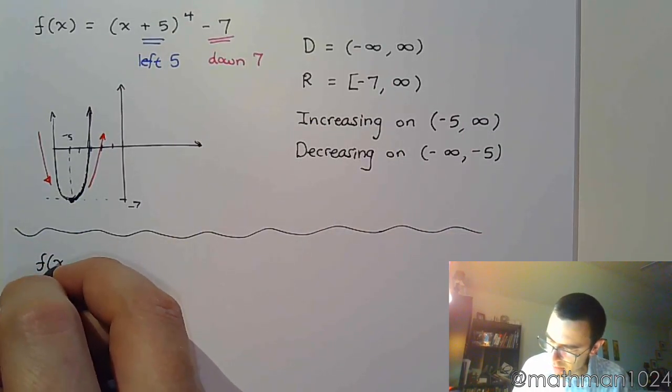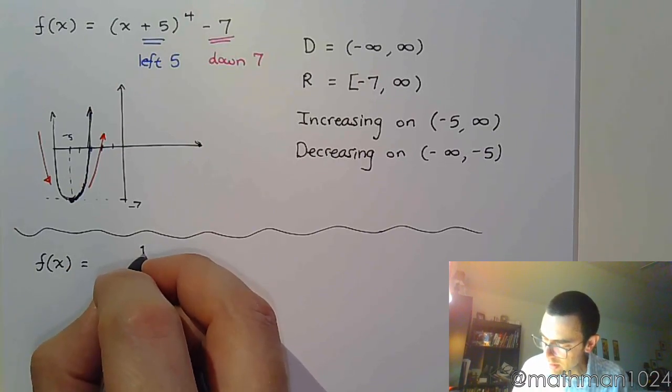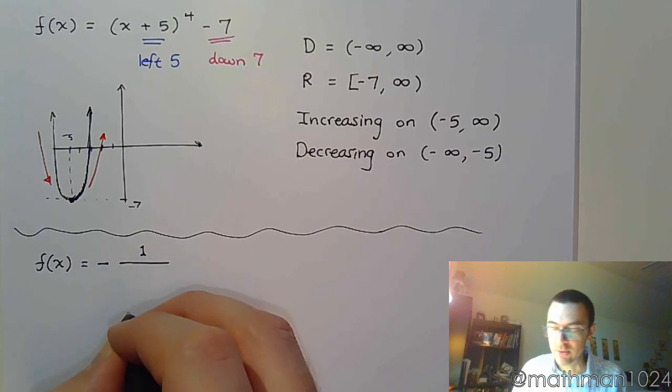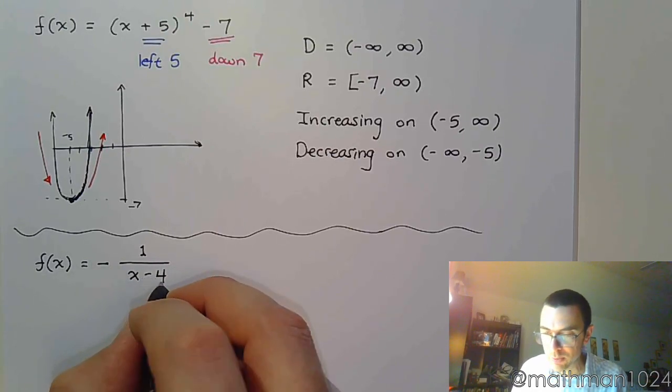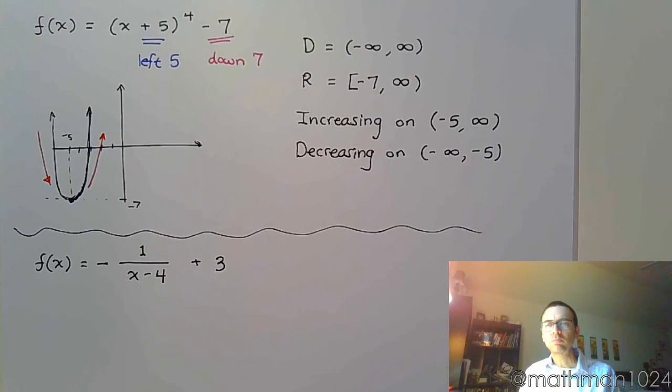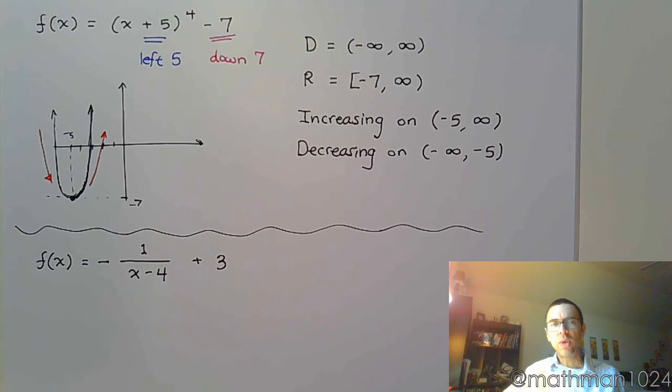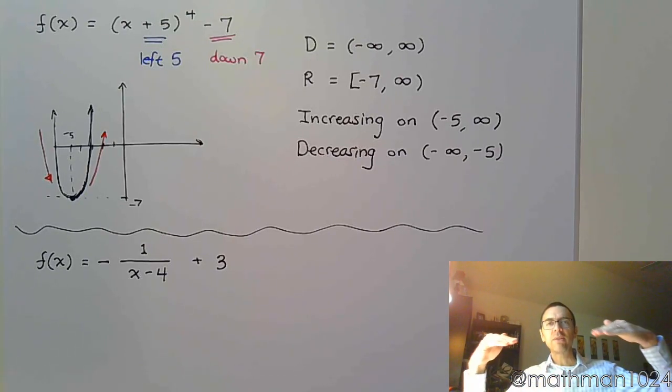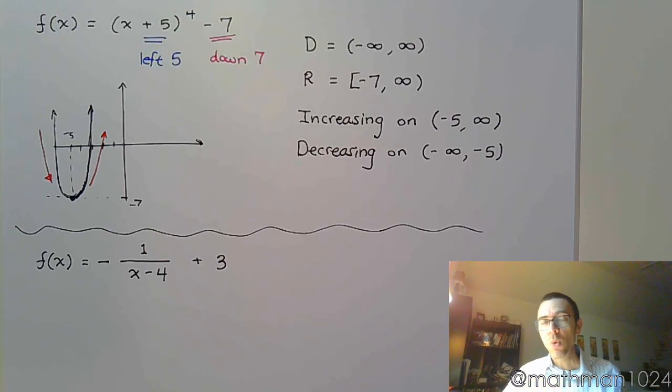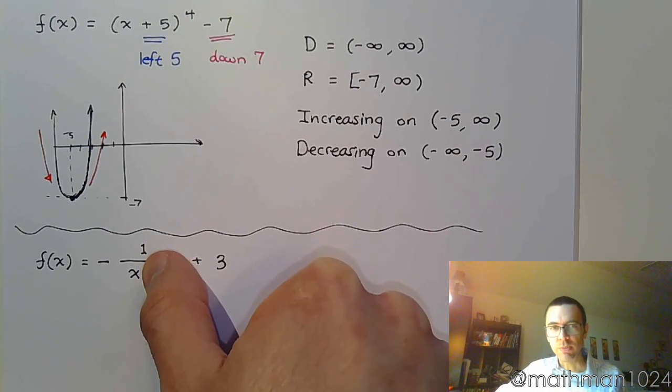The next example that we have is negative one over x minus four plus three. So let's think about what this shape is and the location. So we have a fraction. We have a rational function. And so we typically have two options for that. We have what we call the missed high five. We also have the volcano. And the difference between those is that the missed high five is just going to be like one over x, whereas the volcano is one over x squared. Well, we don't have x squared here. We just have one over x. Like if I didn't even have that four, we see one over x, so it's the missed high five.